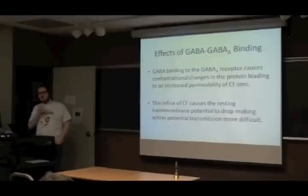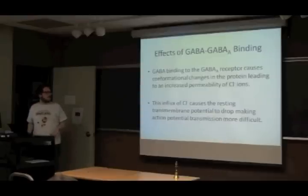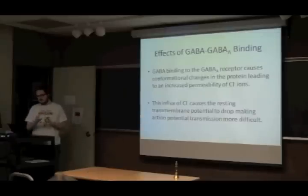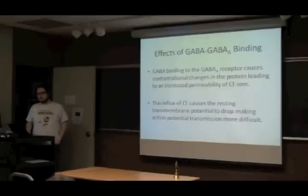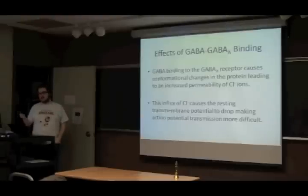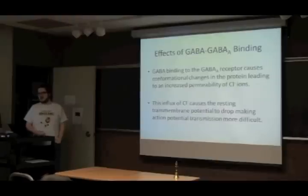When GABA binds its receptor — in this case the GABA-A receptor — GABA binds to the site between the two subunits, and this causes the protein's conformation to physically change. This causes it to become more permeable to chloride ions, so the chloride ions rush into the cell, making it more negative and making it less likely to fire.